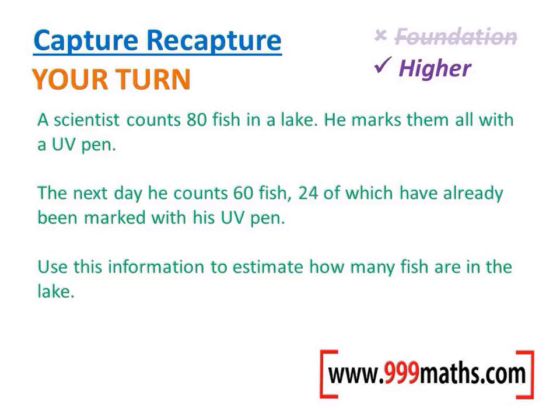Here's a question for you to do — pause before we go through the answer. Let's write those fractions out for day one and day two. On day one, he counted 80 out of an unknown number altogether, and that's what we're trying to work out — how many fish are in the lake. On the second day, he counted 60 and 24 of them had been marked. So on day one, 80 out of unknown were marked; on day two, 24 out of 60 were marked. We know that these fractions are equivalent.